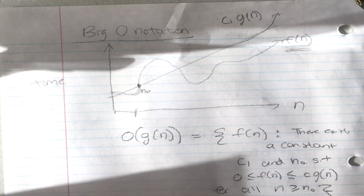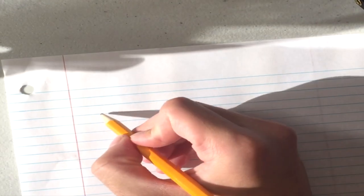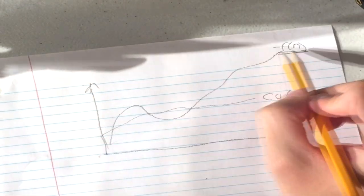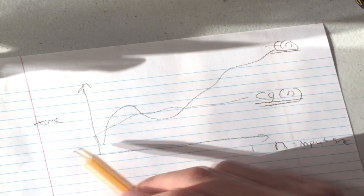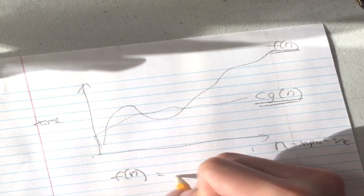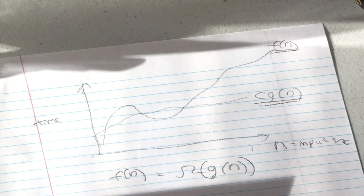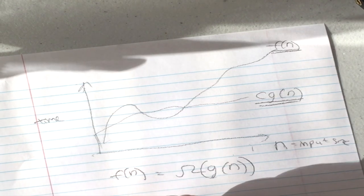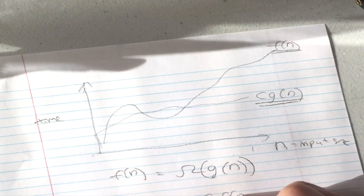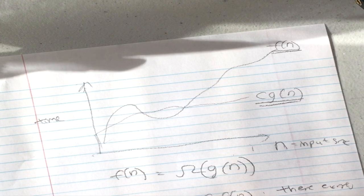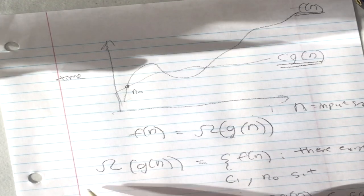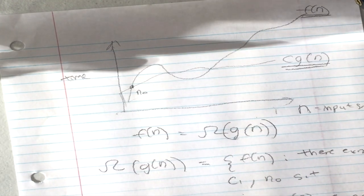There's also omega notation, which is a lower bound. The time function is bounded below — you have a lower bounding function. Technically you can write any function that's bounded below if you can find a constant. Most of the time we don't really care about the lower bound as much. Mathematically: Ω(g(n)) = f(n) if there exists c and n₀ such that 0 < c·g(n) ≤ f(n) for all n ≥ n₀.